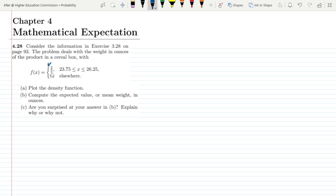This value is constant. You can see that this is 2/5 for the range of x greater or equal to 23.75 and less than or equal to 26.25 and 0 elsewhere. So the first part of it is that we have to plot the density function.